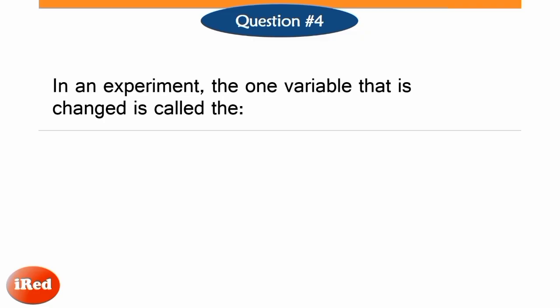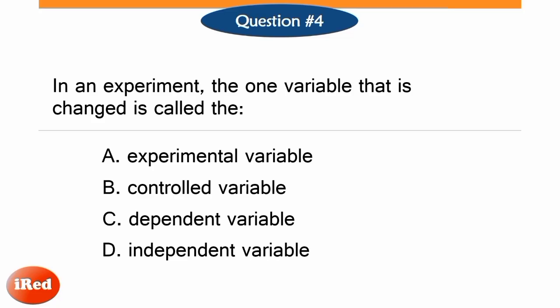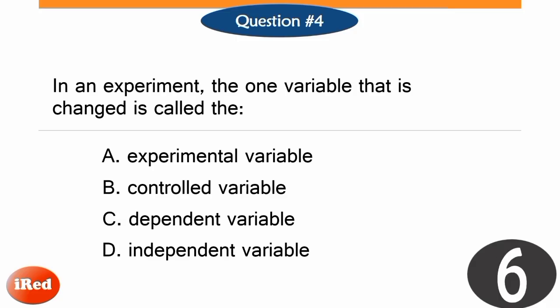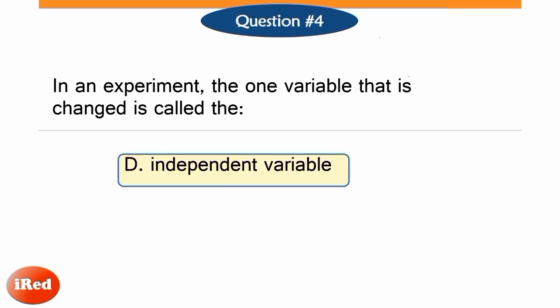Fourth question: In an experiment, the one variable that is changed is called the independent variable. The correct answer is letter D — the independent variable, also known as the manipulated variable. It is the part of the experiment that the experimenter has direct control over and is changed on purpose.